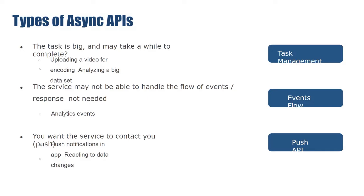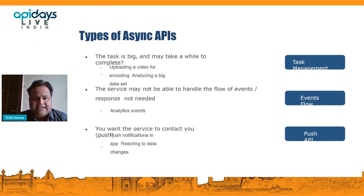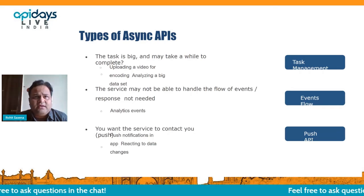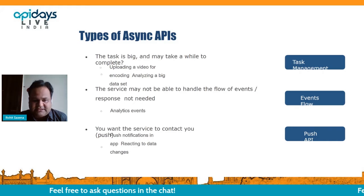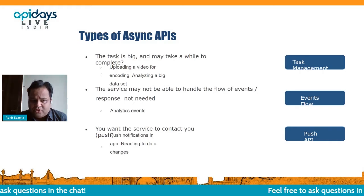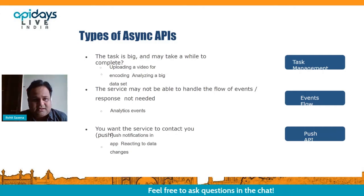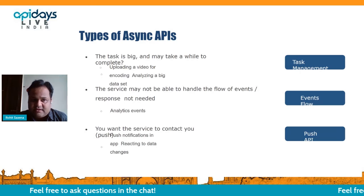There are scenarios where asynchronous APIs are essential. Some requests involve long-running processing — like uploading a video, analyzing a big dataset, or performing analytics — where an immediate response isn't available. You may also want to react to data events, like in Uber where cabs continuously send GPS location updates as they move. In all these scenarios, synchronous APIs won't work; you need asynchronous APIs.